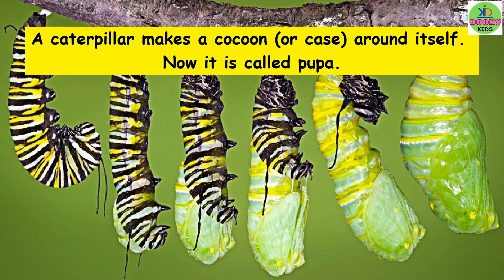A caterpillar makes a cocoon or case around itself. Now it is called pupa.